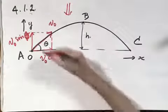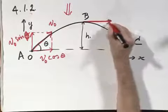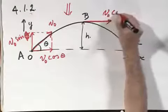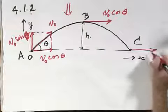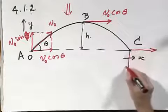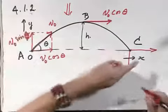Clearly at its highest point, the y component has completely disappeared, but the x component is unchanged, so that it is still v zero cosine theta. And when it hits the ground here, the x component has not changed, and the y component has changed only in the sense it has the same magnitude, but it has flipped over.